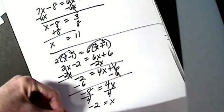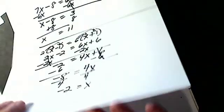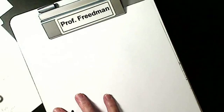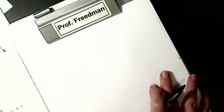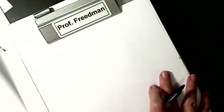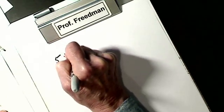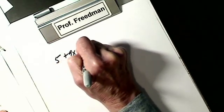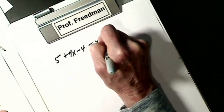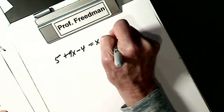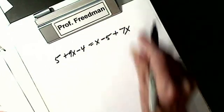We'll do one more. Let's say I have 5 plus 9X minus 4 equals X minus 5 plus 7X.